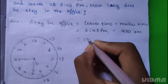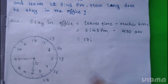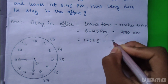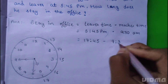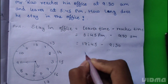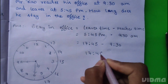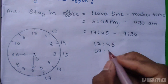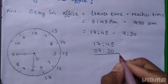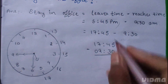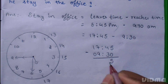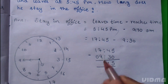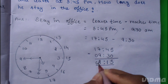17 hours means 5 hours, 45 minutes. Subtract 9 hours 30 minutes. So 17:45 minus 9:30. 45 minus 30 is 15. 17 minus 9 is 8.